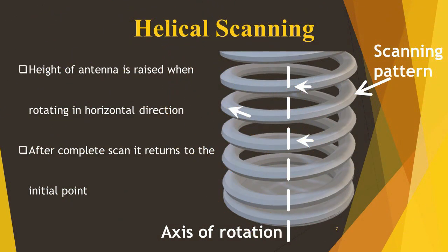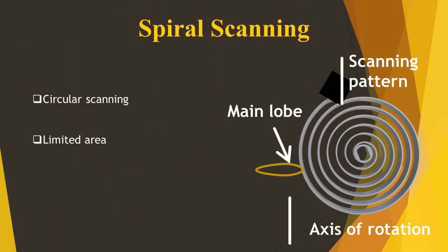Helical scanning is mainly used to determine height. The antenna is raised while rotating in a horizontal direction. The scanning pattern is done in a helical fashion, and after the complete scan it returns to its original position, that is the initial point.